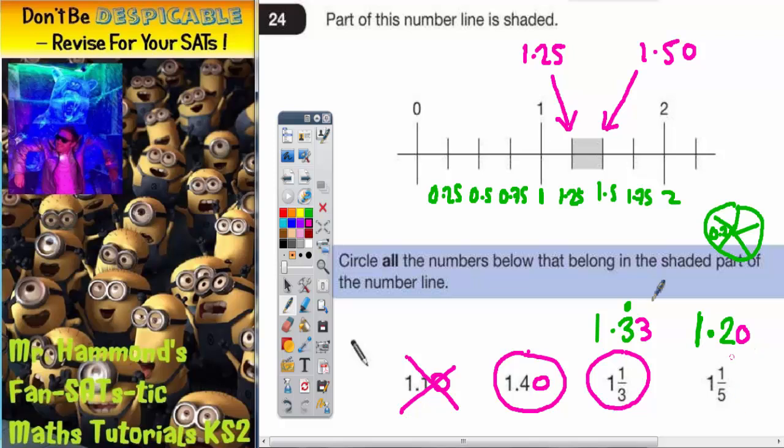And 1.20 is less than 1.25. So 1.20 would be a bit to the left of this area. So that one would not lie between. Therefore we've got our answers: 1.4 and 1.3.